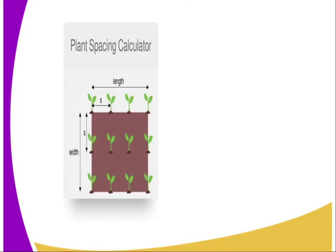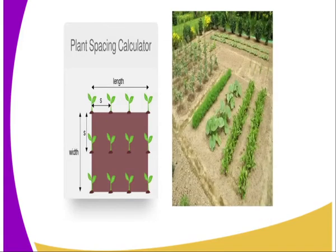Regarding plant spacing, as you can see on the diagram, there is length, which is represented by the letter S in a horizontal direction, and the row, which is represented by the term width.